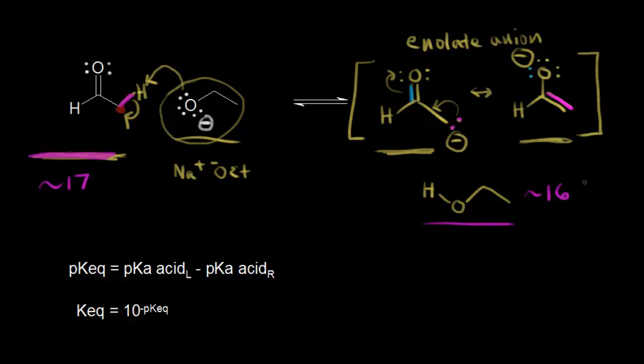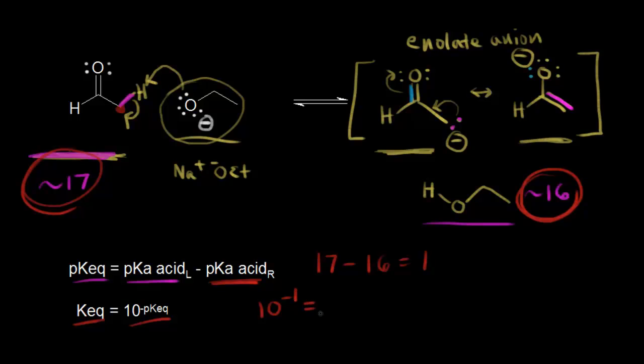One way to figure out which direction is favored is to use these equations down here. We could first find the pKeq by taking the pKa of the acid on the left, so the acid on the left is our aldehyde, so the pKa is 17, and from that number we subtract the pKa of the acid on the right. The pKa of the acid on the right is 16, which is ethanol, so 17 minus 16 gives us one. And then to find the Keq, we can take 10 to the negative pKeq, so 10 to the negative one is equal to 0.1, which is obviously less than one, and so we know that the equilibrium favors the reactants. The equilibrium is back in this direction, so the equilibrium favors formation of the aldehyde.